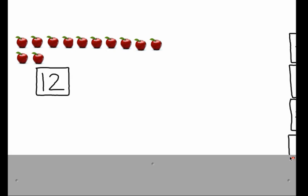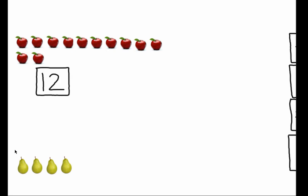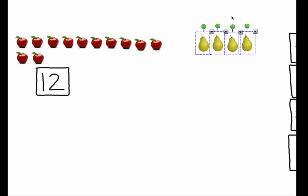Now what I'm going to do is I'm going to take this group of pears here and I'm going to put them together with the group of apples that I have. Let's count how many pears I have. One, two, three, four. So I have four pears.